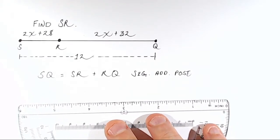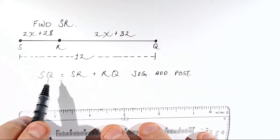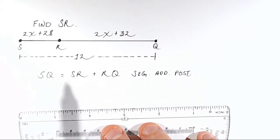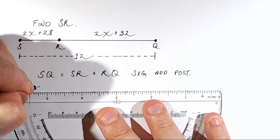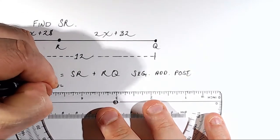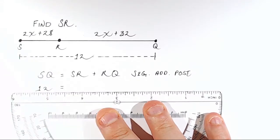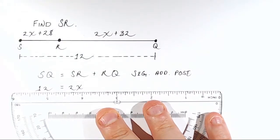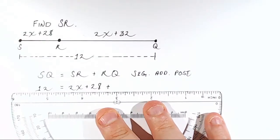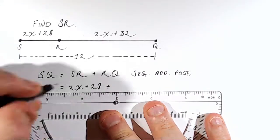Okay, so what should we do next? Well, what's going to be important for us is to substitute for these line segment letter names the actual values we're given. So we are given that SQ is equal to 12. So we can say 12 is equal to whatever SR is. SR is 2x plus 28. So we'll write, instead of writing SR, we'll write 2x plus 28 plus RQ, the distance from R to Q, which is currently represented by 2x plus 32.